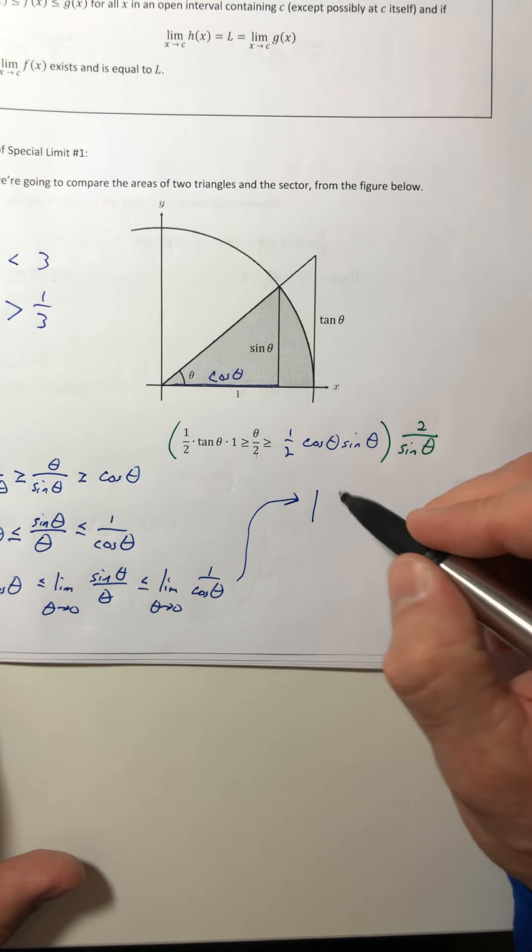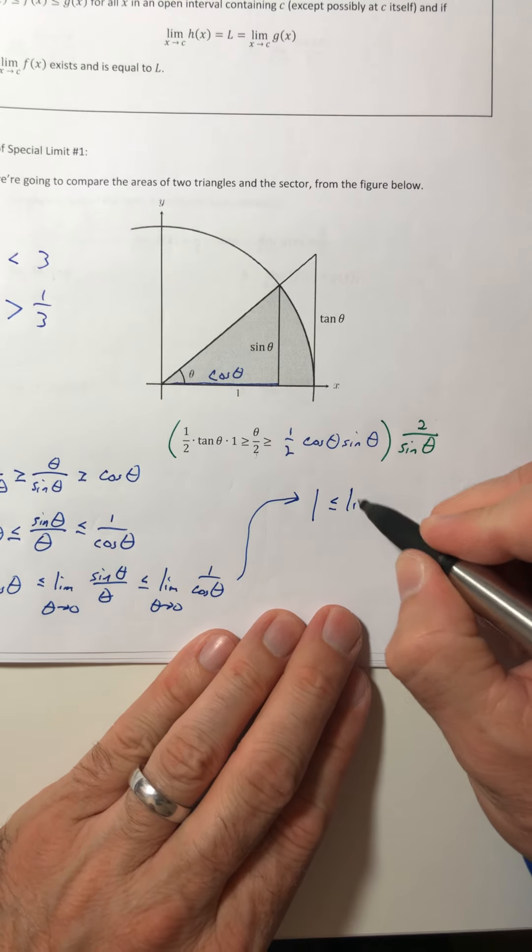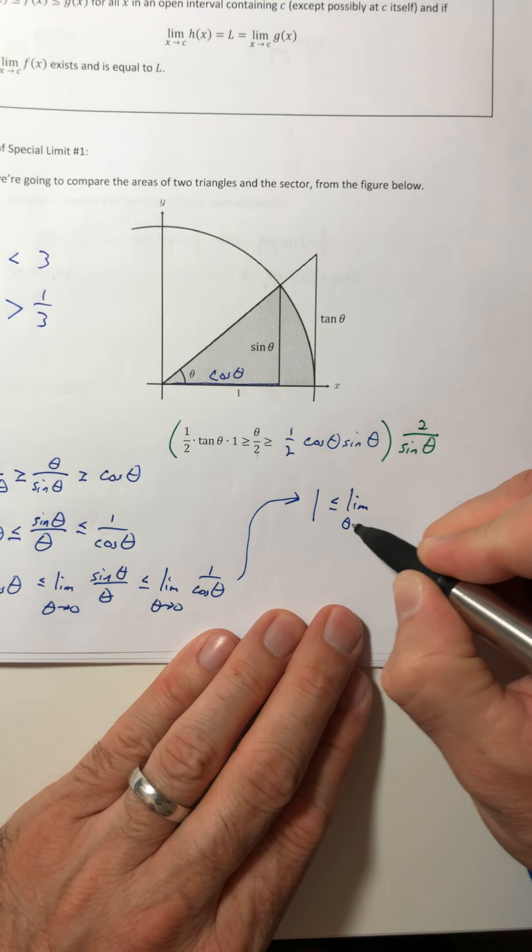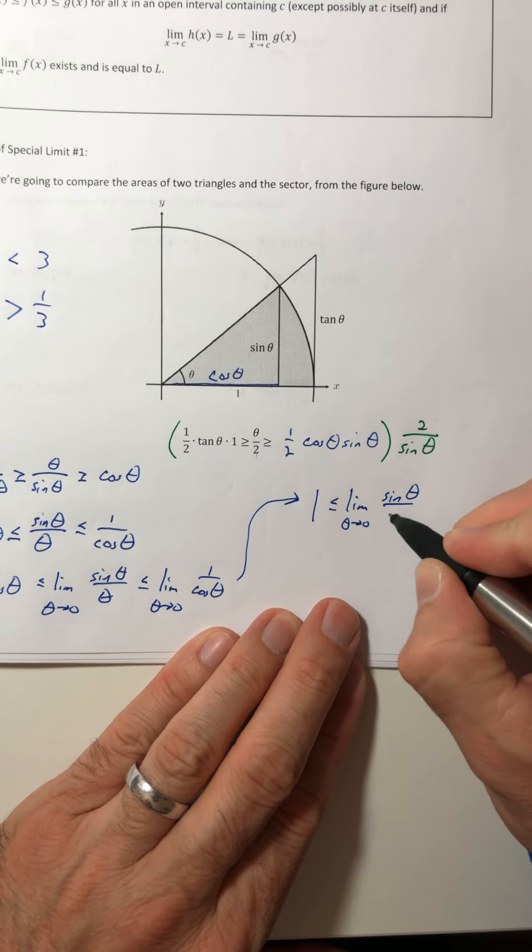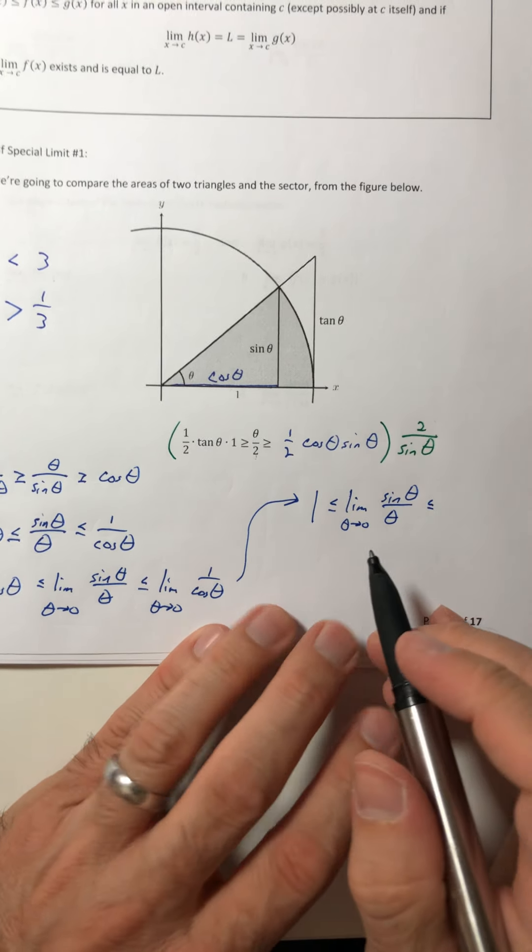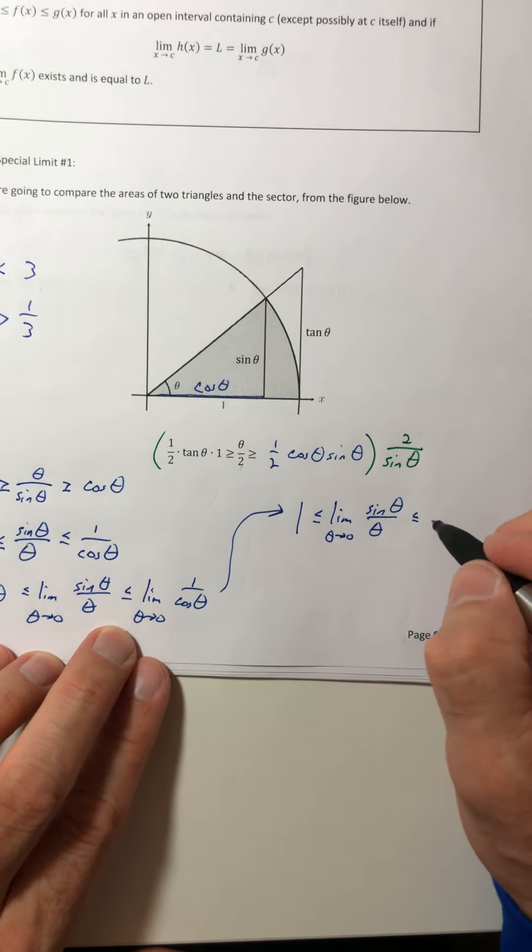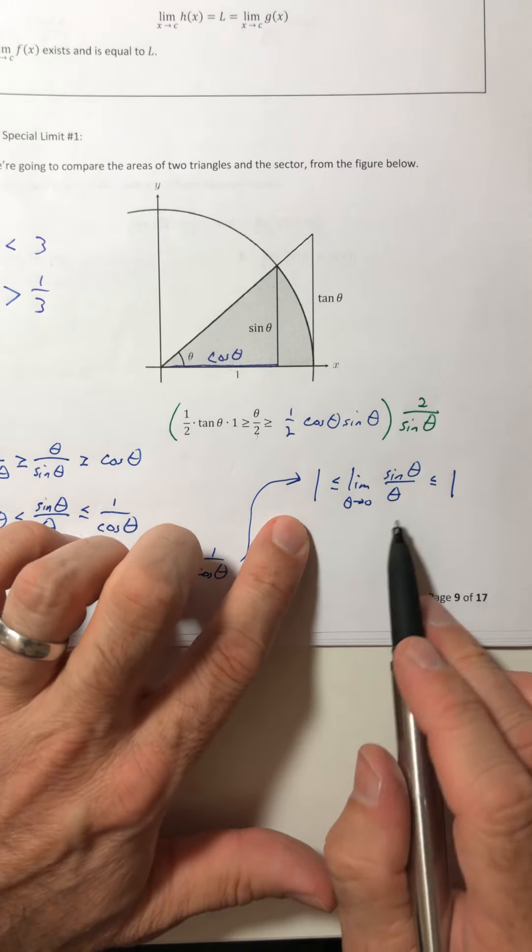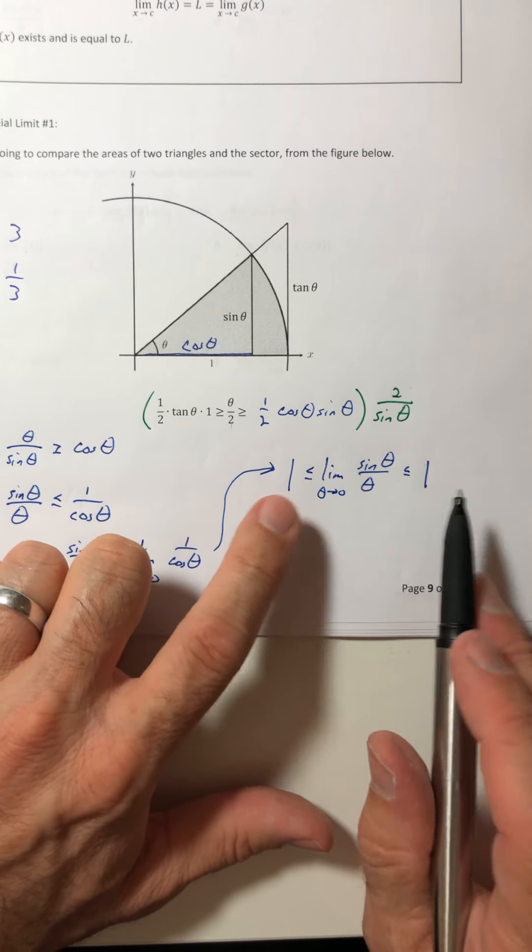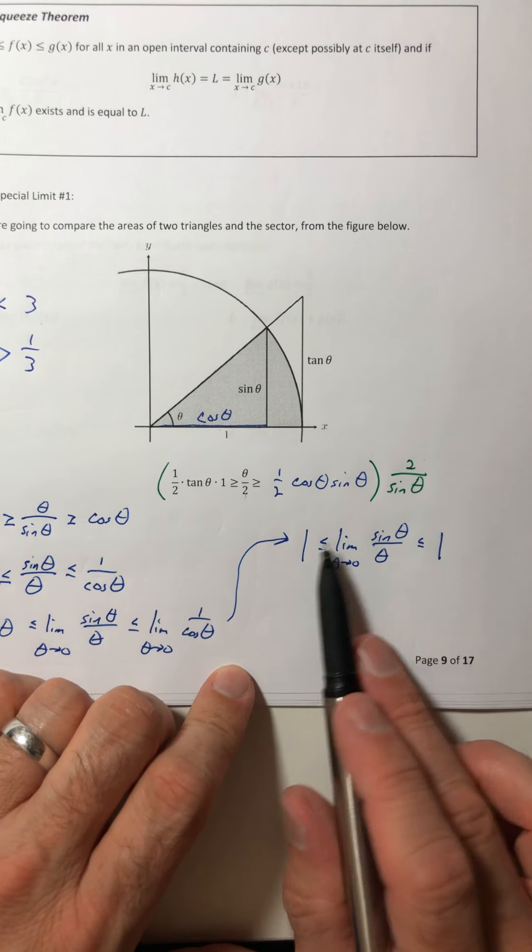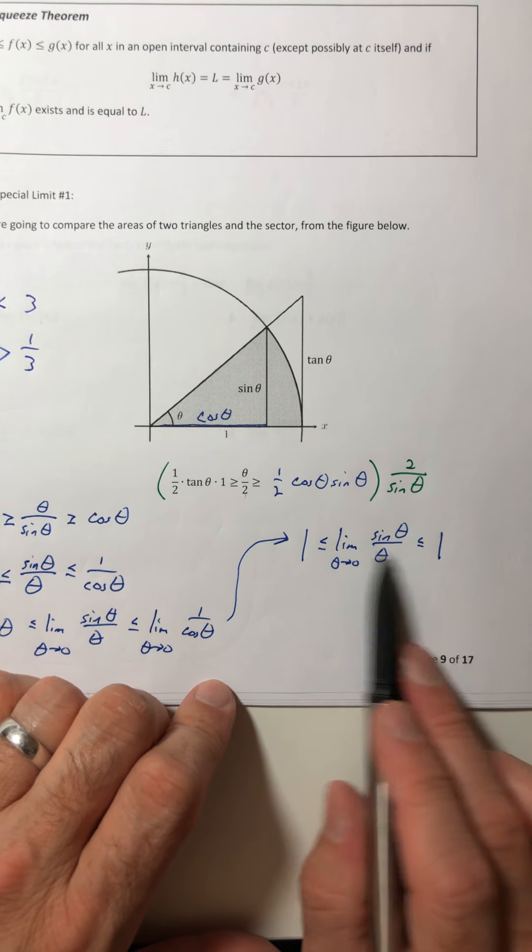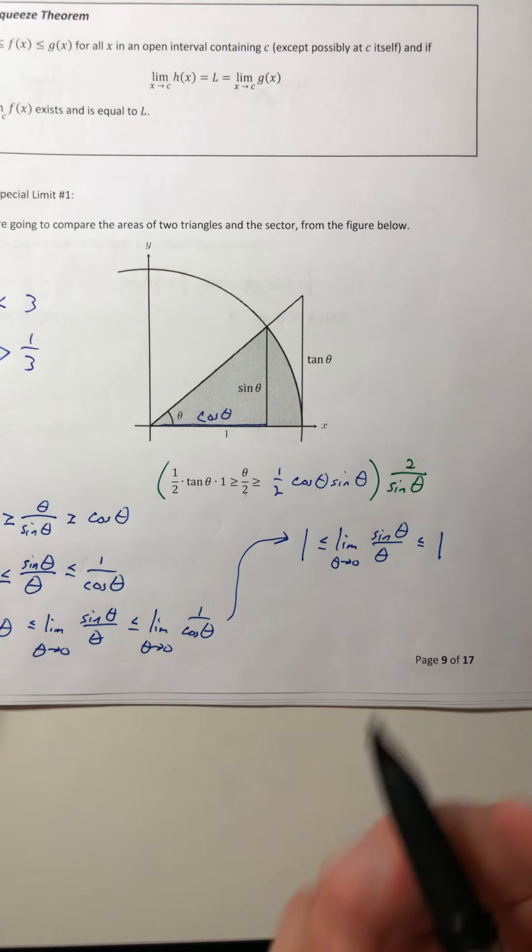One. So one is less than or equal to the limit as theta goes to zero of sine theta over theta. It's less than or equal to one over one is also one. So right here, this is where that squeeze theorem is coming into play. You're saying that this thing is bigger than one and smaller than one. Well then it would have to equal one.